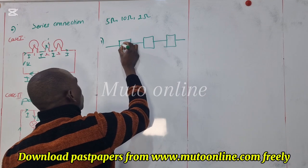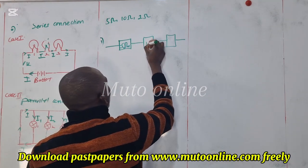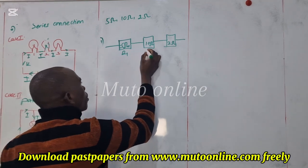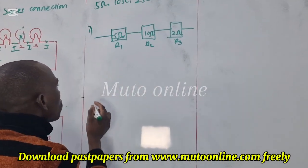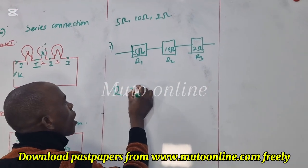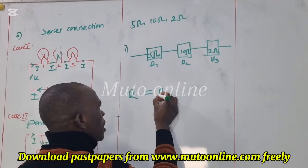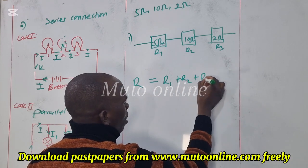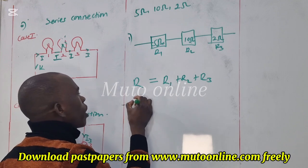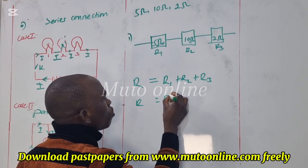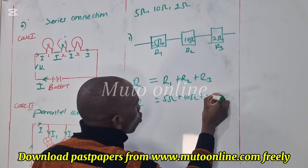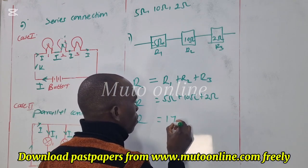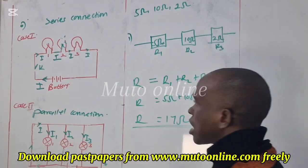These resistors are: resistor 1 is 5 ohms, resistor 2 is 10 ohms, and resistor 3 is 2 ohms. The effective resistance R, when these resistors are connected in series, we shall add the individual resistances to get the total. So R equals R1 plus R2 plus R3, which is 5 ohms plus 10 ohms plus 2 ohms. Our effective resistance R will be equal to 17 ohms when these resistors are connected in series.